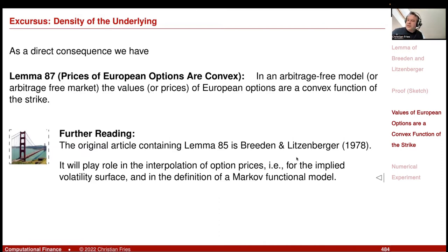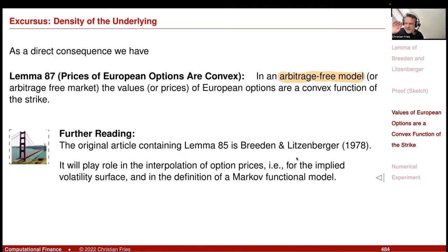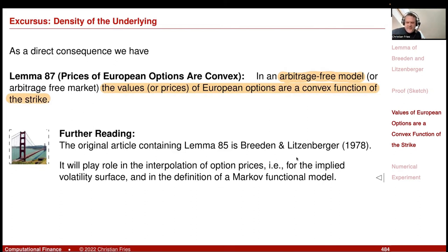An immediate consequence in an arbitrage-free model: this density is positive, so the second derivative has to be positive. This means that European option prices are convex functions of the strike. So if you spot something that is not convex in the price function — where strike maps to option value — then you should be careful. Your model is not arbitrage-free. There's some issue.